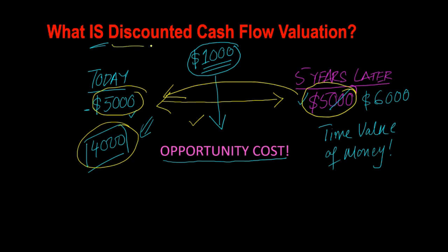And so this is the core idea behind discounted cash flow valuation. As you are waiting for money to come in the future, you are losing out on opportunities to do something else. There's an opportunity cost involved, which means you discount that future amount back — it means less to you today. In this chapter, you will see different terms like present value, future value, compound interest, and discount rate. But at the heart of all of that is this idea of opportunity cost and therefore discounting.